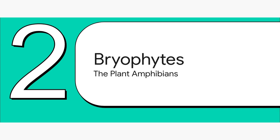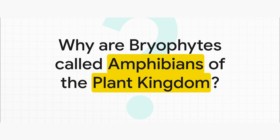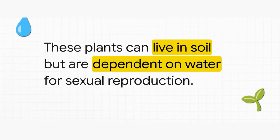We're climbing up the evolutionary ladder from algae. Next stop, section two: bryophytes. You probably know them as the plant amphibians. Now this question — oh man — this is an absolute favorite for the NEET exams. Why on earth are bryophytes called the amphibians of the plant kingdom? Seriously, if you get the logic behind this, a whole bunch of other concepts will just click into place. It's that important. And the answer is actually pretty simple.